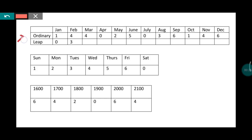In the first table you can see the months: January, February, March, April, May, June, July, August, September, October, November, and December. Their codes are written as 1, 4, 4, 0, 2, 5, 0, 3, 6, 1, 4, 6. January, February, March code is 1, 4, 4. April, May, June code is 0, 2, 5. July, August, September code is 0, 3, 6. October, November, December code is 1, 4, 6.